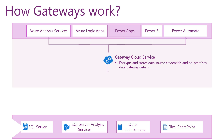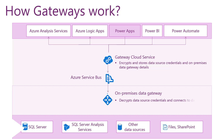The gateway cloud service takes this query, analyzes it, and encrypts the credentials for the on-premises data sources, then pushes it through the Azure Service Bus to the on-premises data gateway. The on-premises data gateway decrypts the data source credentials and connects to the on-premises data source. It sends the queries to the on-premises data source, and once the data source prepares the query results, it pushes them back to the on-premises data gateway, which sends them through the Azure Service Bus to the cloud service.